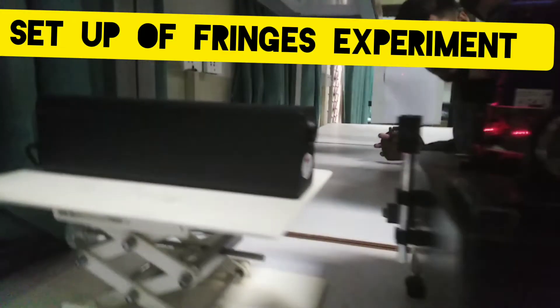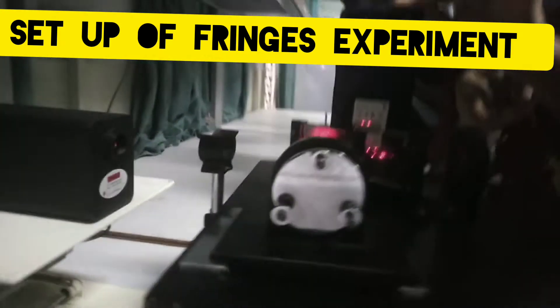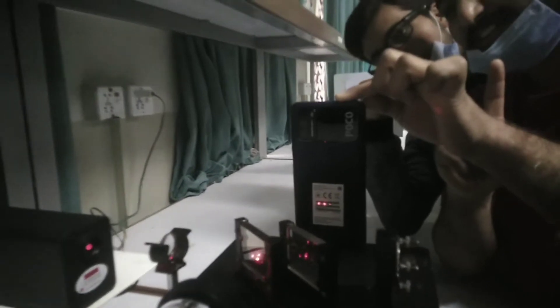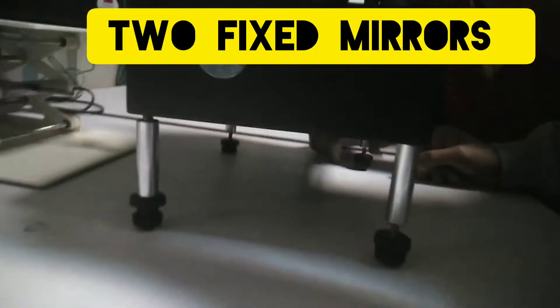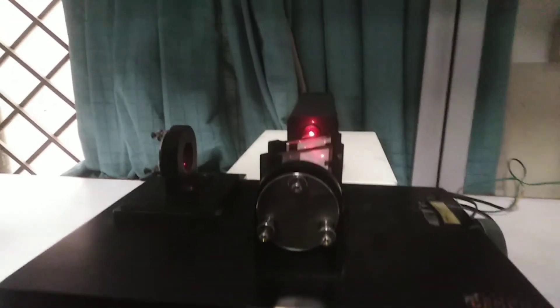One beam strikes a fixed mirror and the other strikes a movable mirror. We can see both the movable mirror and the fixed mirror. These are M1 and M2, the two mirrors.